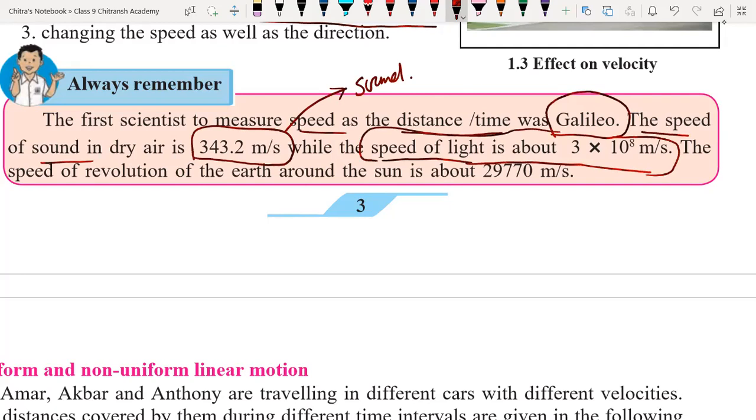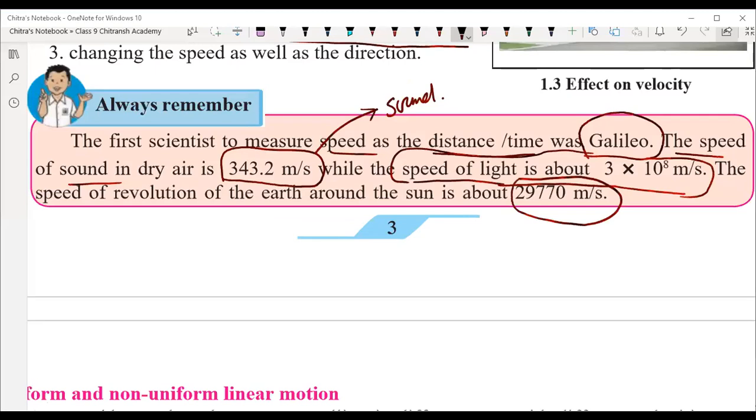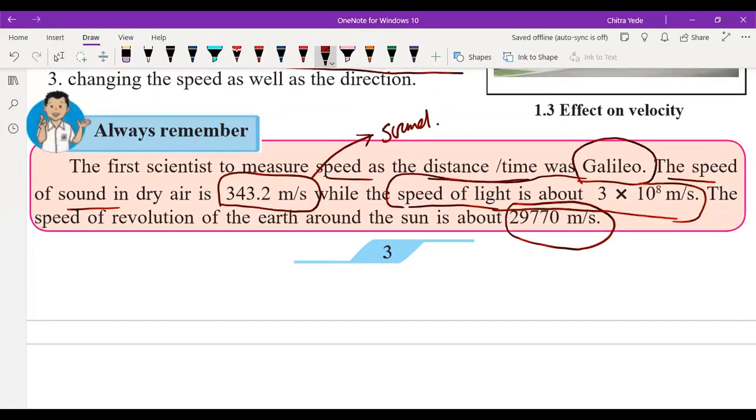And the speed of revolution of Earth around the sun is 29,770 meters per second. You can convert it to kilometers also by dividing by 1000, so you will get 29.77 kilometers per second.